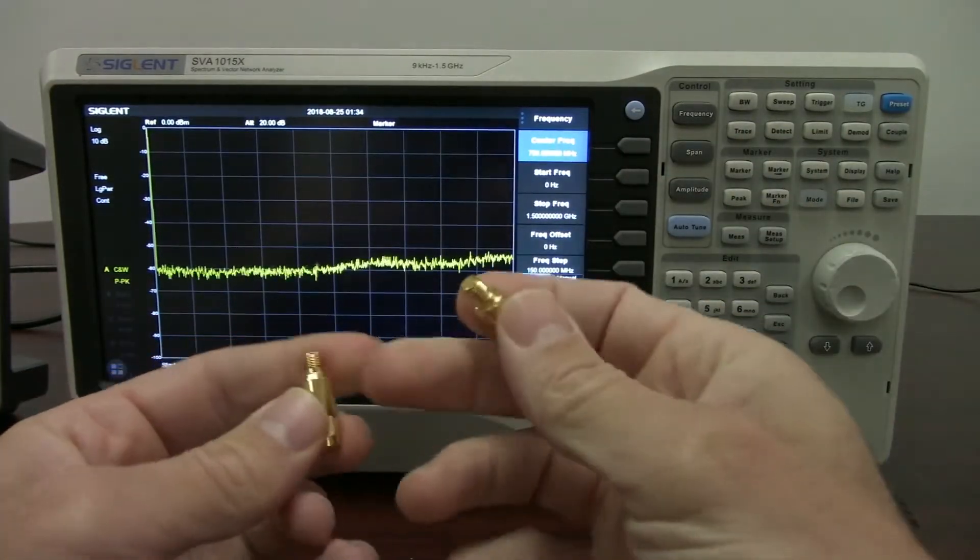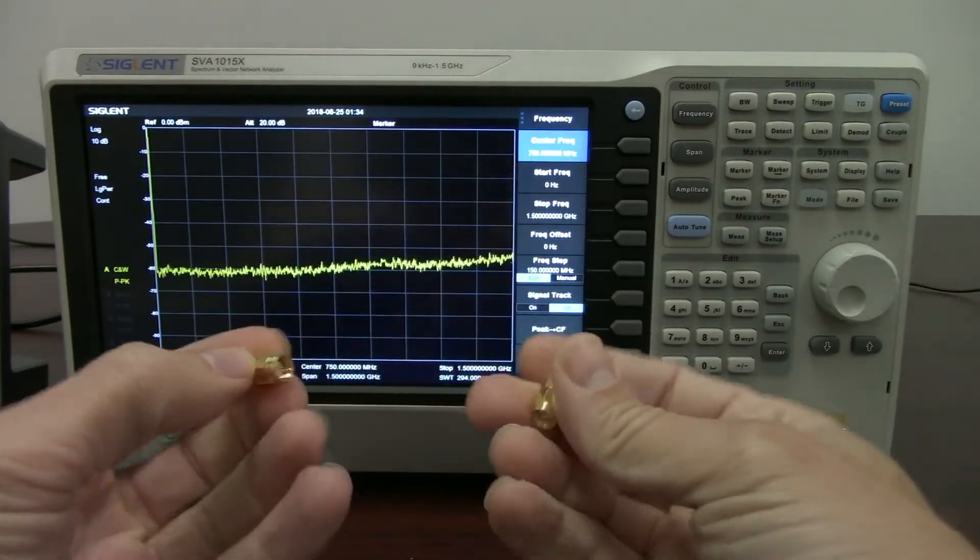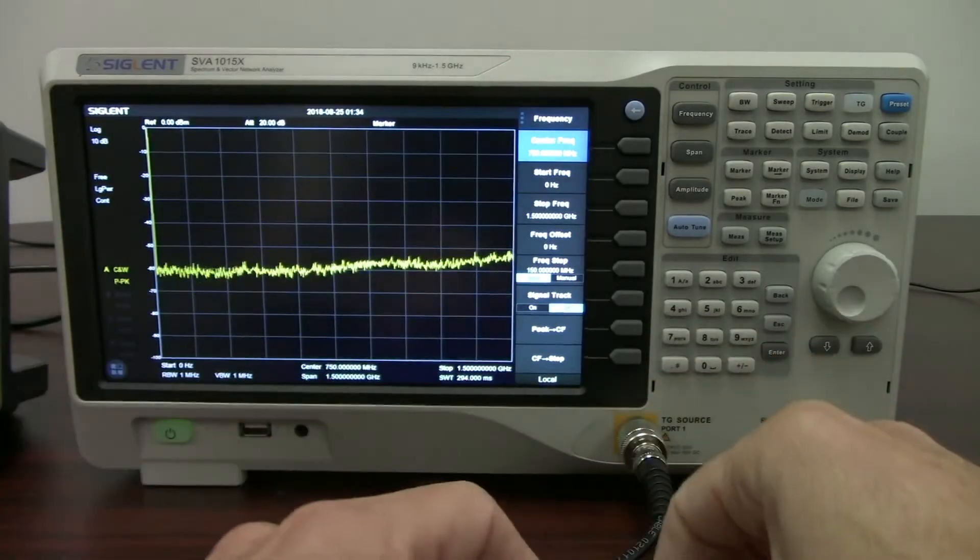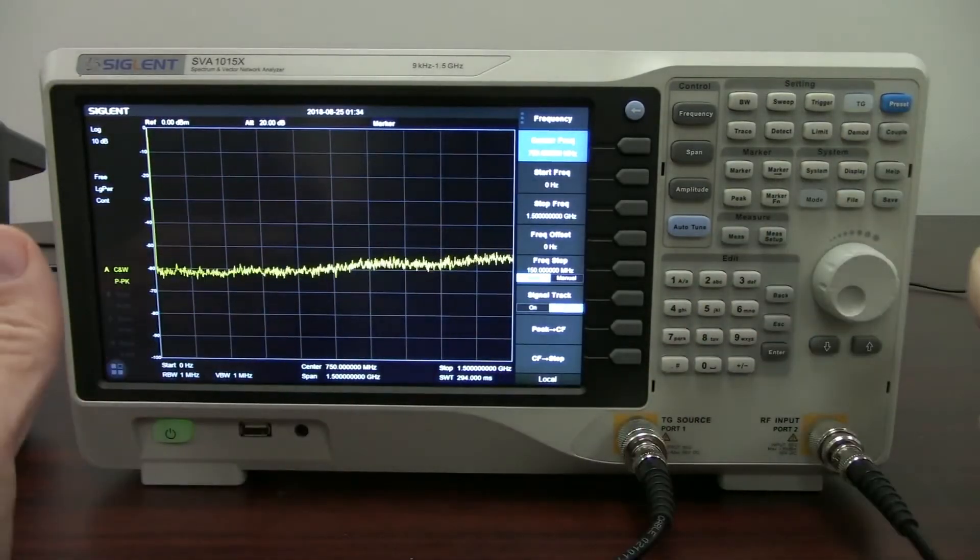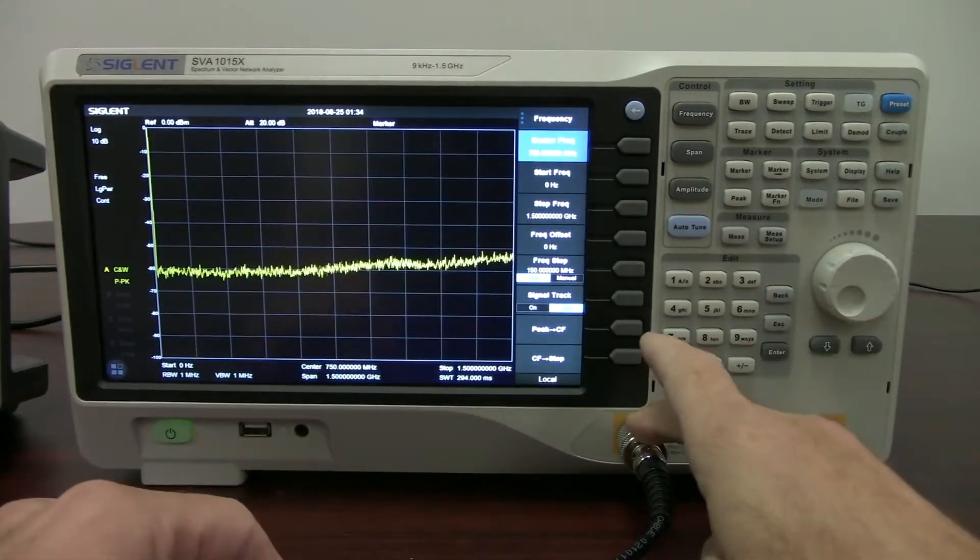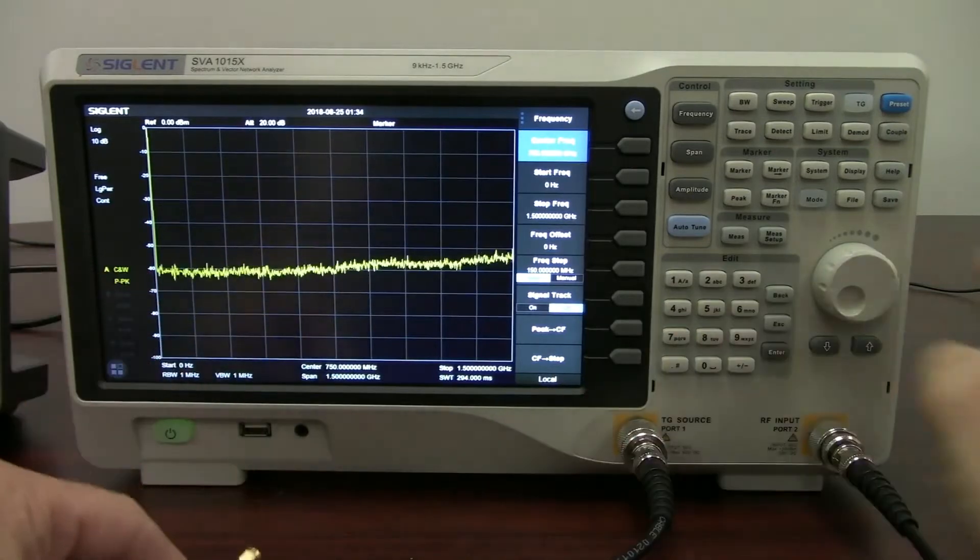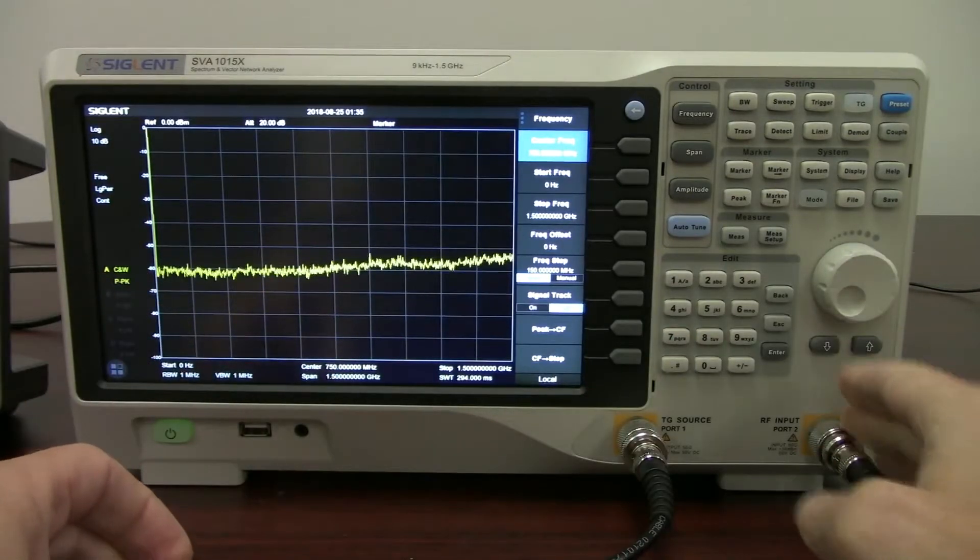These are 50 ohm, and they terminate with SMAs on either end, SMA female and SMA male. And so how we're going to do that, if you're not aware of the way that the spectrum analyzer works, we've got a tracking generator output here connected to an adapter and a cable that terminates in an SMA. And then we have an RF input over here.